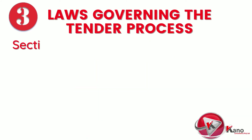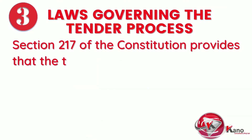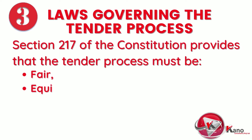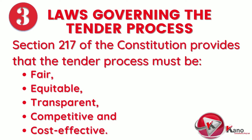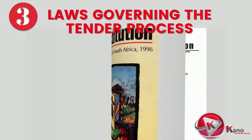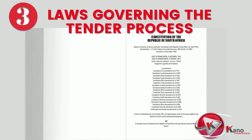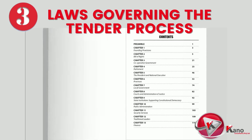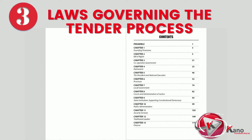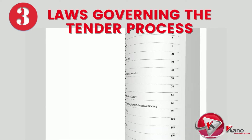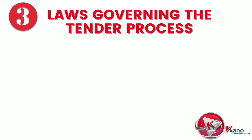In the South African public sector, the tender process is governed by various regulations. These start with Section 217 of the South African Constitution, which provides that the tender process must be fair, equitable, transparent, competitive, and cost-effective. The Constitution is the supreme law of the country and no other law or government action can supersede its provisions. Laws, regulations, and guidelines introduced by government must be drafted and implemented to ensure tender processes are in line with the Constitution.